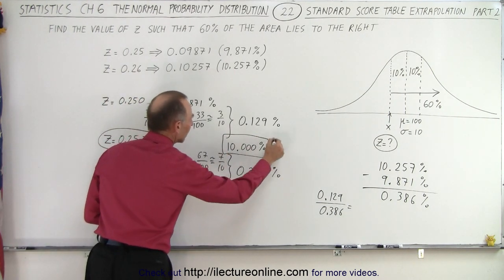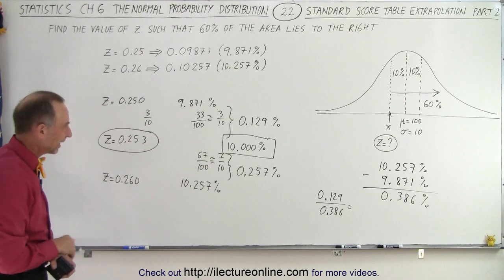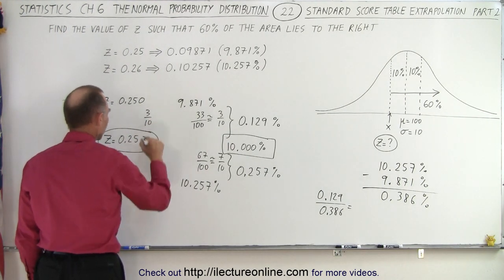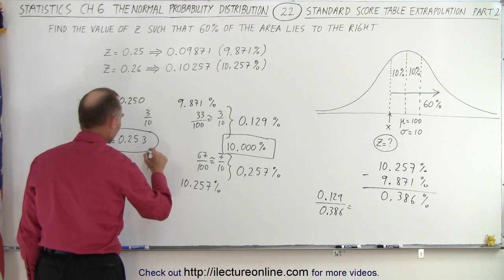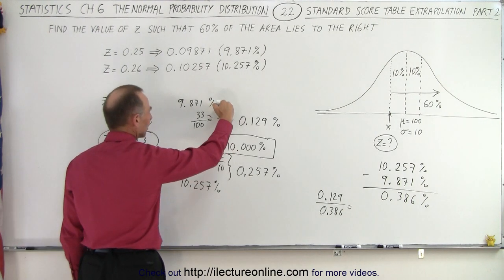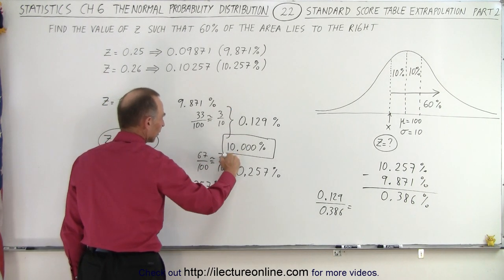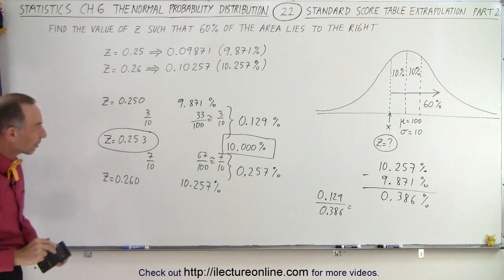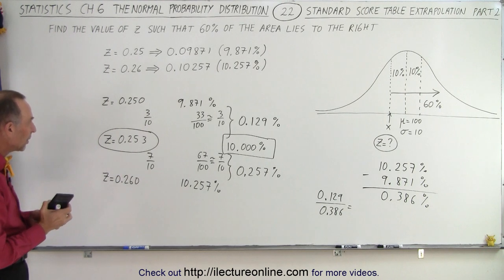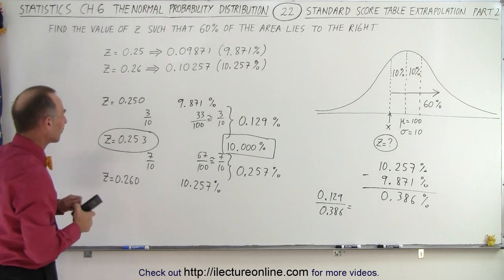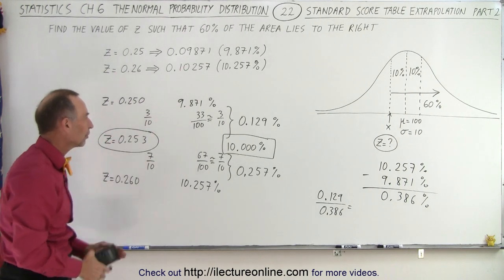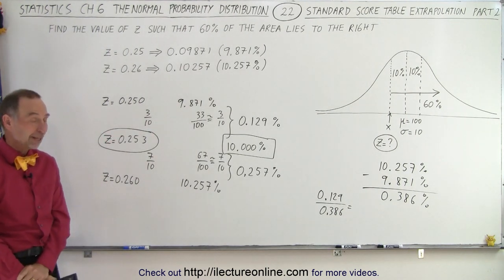Again, this is 3 tenths the way from there to there. This is about 7 tenths the way from there to there. Same here, 3 tenths the way from here to here, 7 tenths the way from there to there. And that's how we use the extrapolation. We want to make sure that the fraction of the difference from there to there is the same as the fraction of the difference from there to 10%. And that is how it's done.